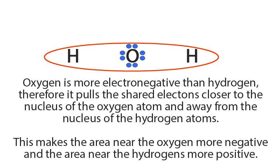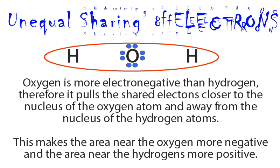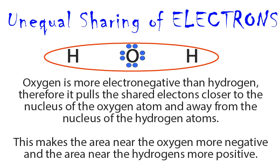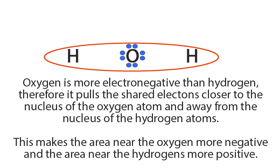When atoms share electrons to become stable, there is often an unequal sharing of electrons, such as the case with oxygen and hydrogen. Because oxygen has a much stronger electronegativity than hydrogen does, the oxygen atom tends to pull the shared negatively charged electrons away from the hydrogen atom and closer to the oxygen nucleus. So by pulling negative charge closer to itself, the oxygen atom becomes slightly negatively charged, and the hydrogen atom becomes slightly positively charged.